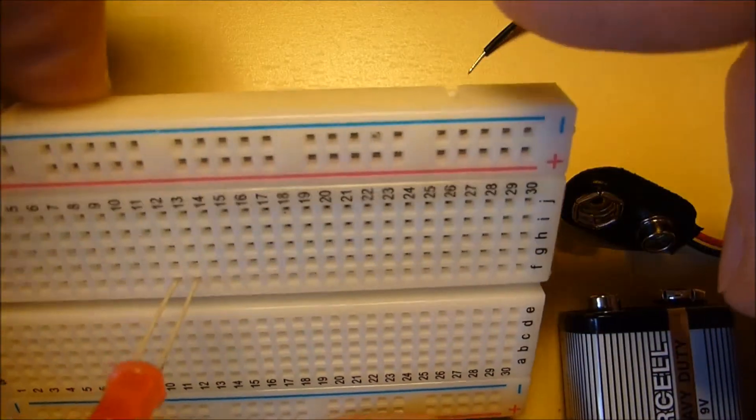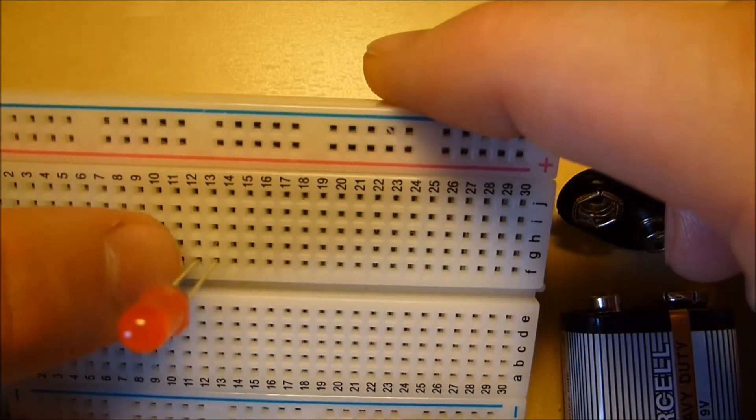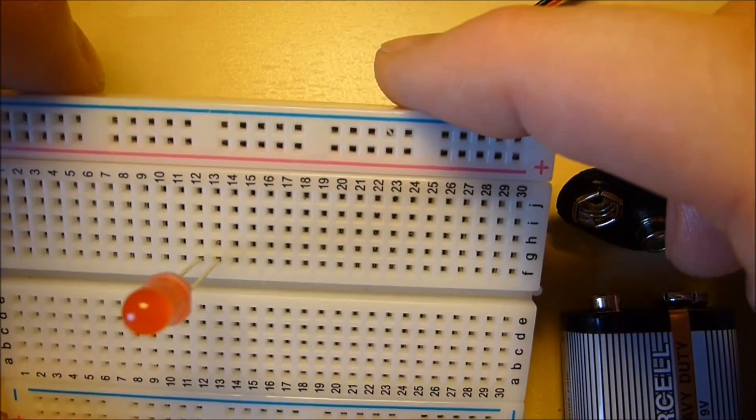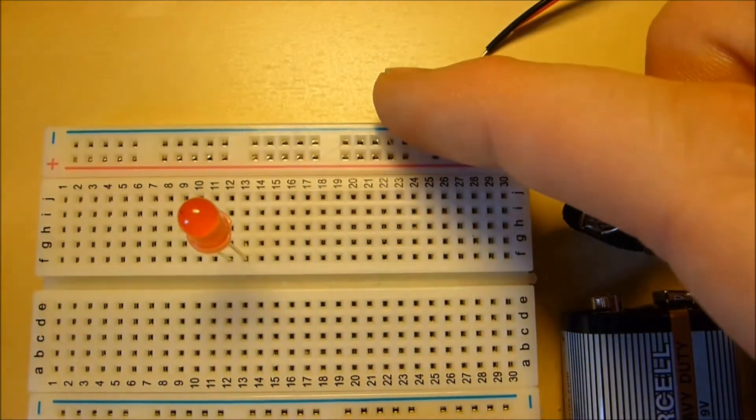But what we've done there is just to put the LED in into the breadboard. So that means anything we connect on this row will be connected to the positive terminal of the LED, and the thing connected on this row will be connected to the negative terminal.